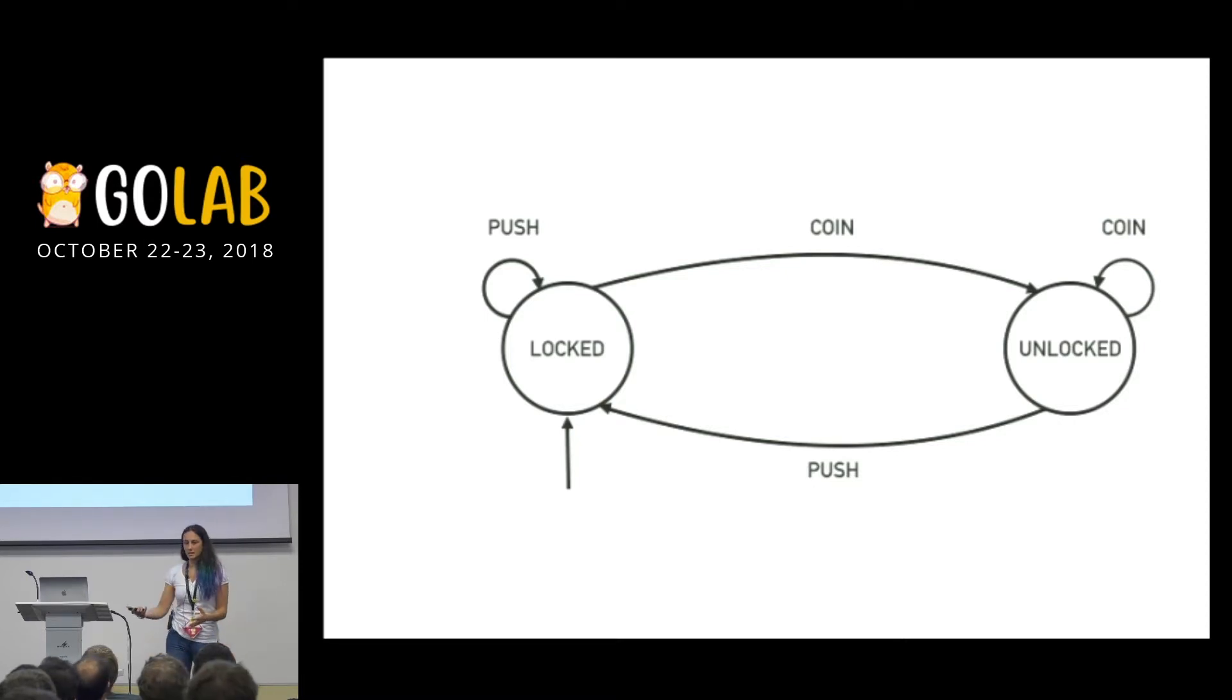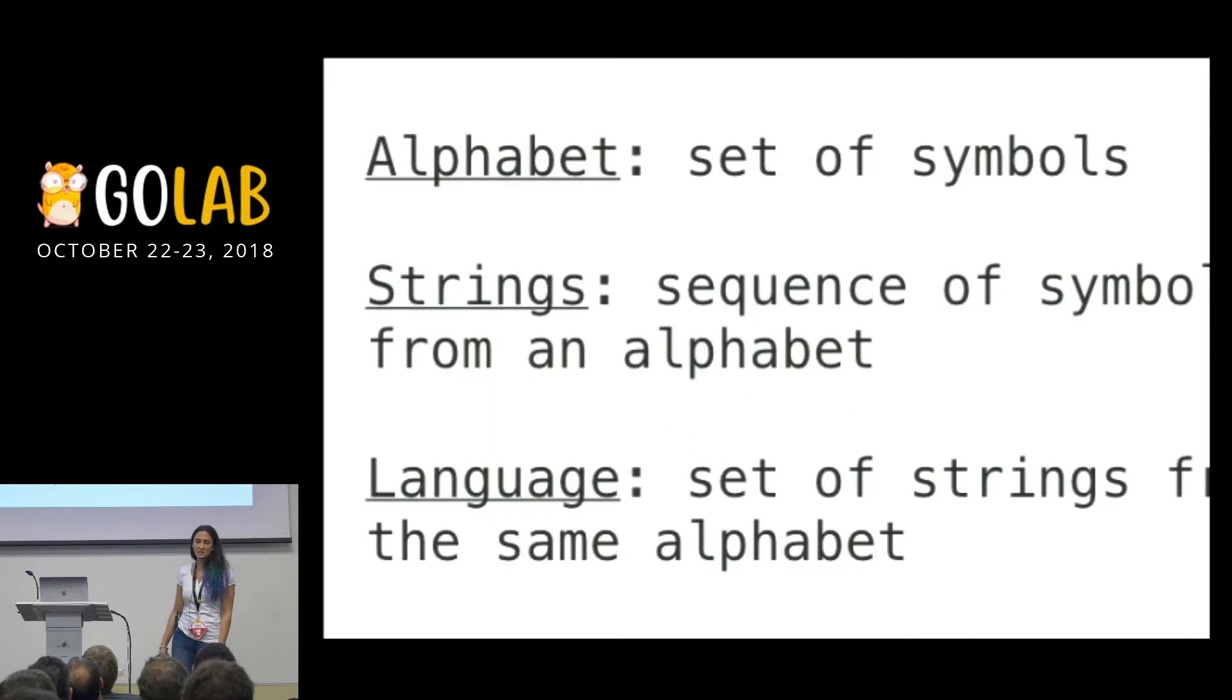So how do we translate this into the coding Base64? First of all, a couple of definitions, just to be on the same page. We define an alphabet, a set of symbols. In our case, upper and lower case letters, numbers, and two extra symbols to reach 64 characters. Strings, sequence of symbols from an alphabet. And language, a set of strings from the same alphabet. So okay, we have a few definitions, an idea of what a finite state machine is. Let's start drawing what our finite state machine would look like.